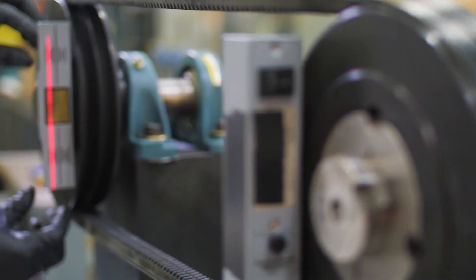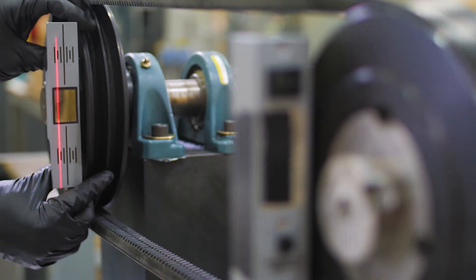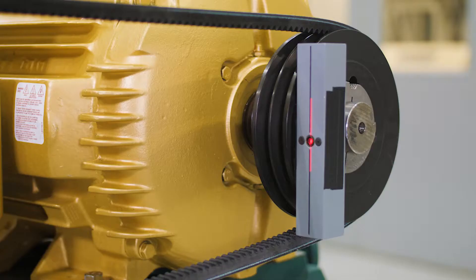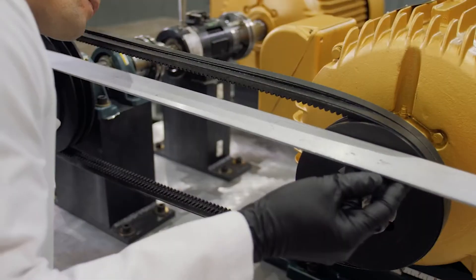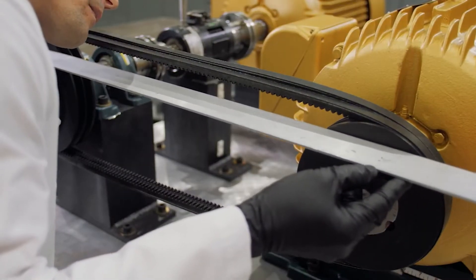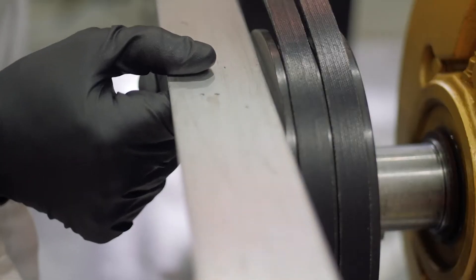V-belt and synchronous belt drives are widely used to change speeds and transmit torque from a driver, such as an electric motor, to the driven equipment. Proper alignment is critical to maximizing the life of the belt drive.